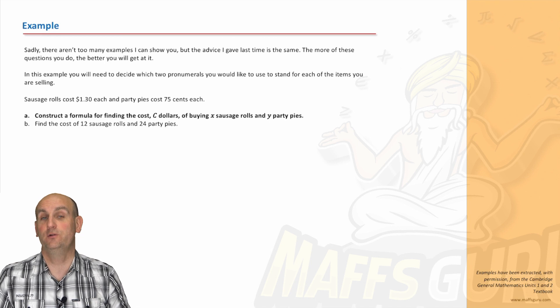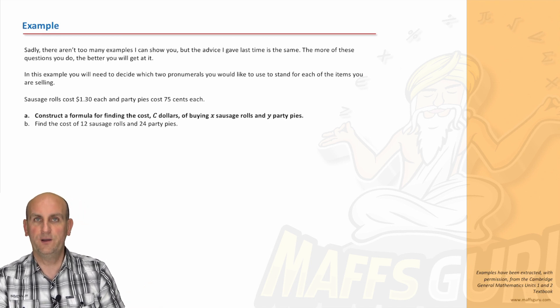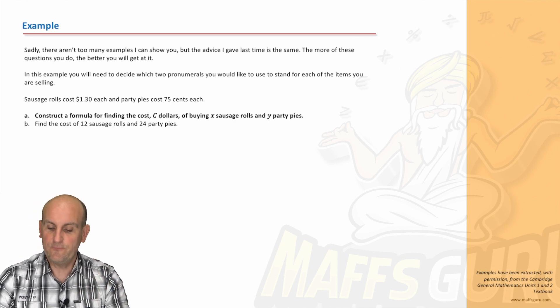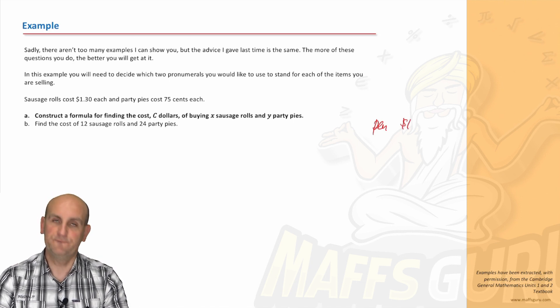So, first things first, they've actually told you the pronoun they want you to use. They want you to use X for sausage rolls and Y for party pies and the total cost. Now, let's go back to that idea I had earlier. If a pen costs a dollar, how much would five pens cost? Well, you'd be like, $5, yeah. How much would 17 pens cost? You say, $17.